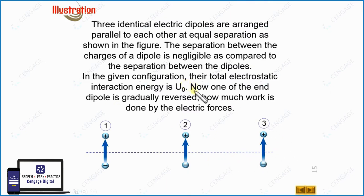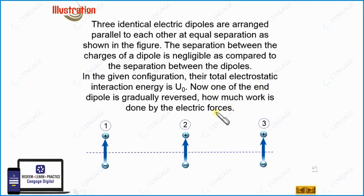Now, one of the end dipoles — either 1 or 3 — is gradually reversed. We need to calculate the work done by the electric forces when either dipole 1 or 3 is gradually reversed.